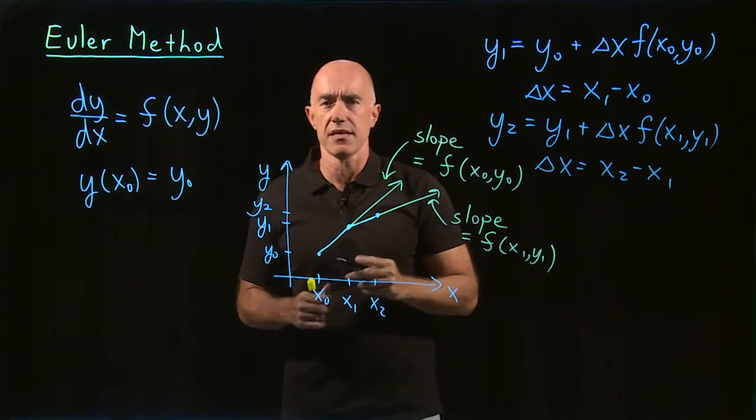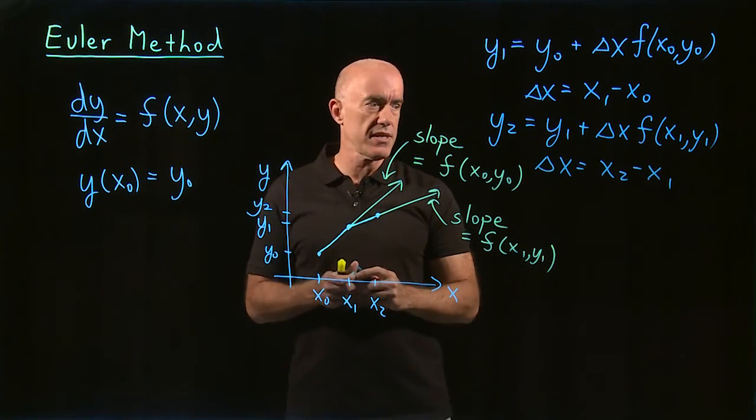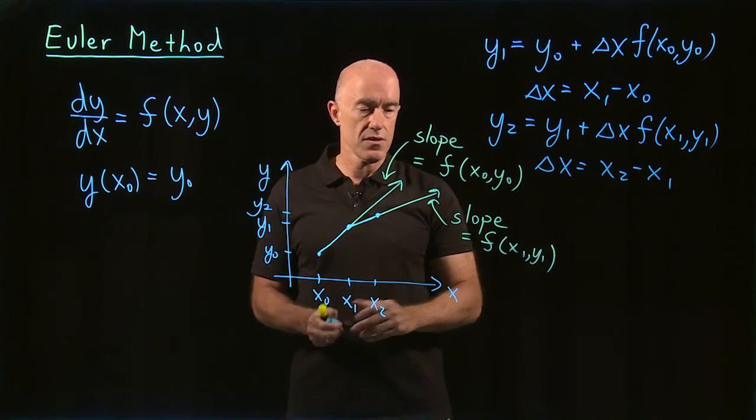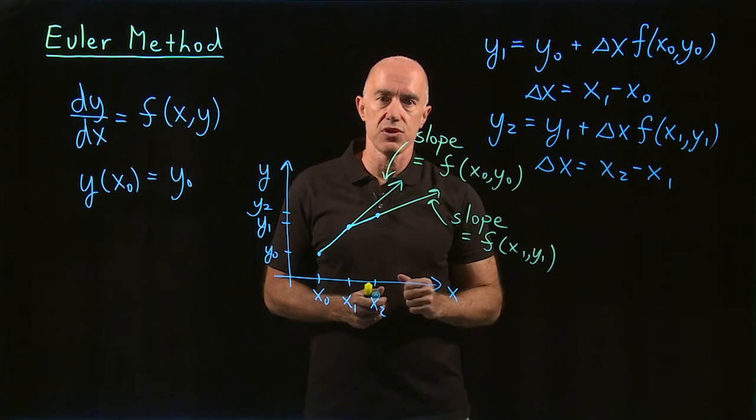So typically in a simple numerical method, you would fix delta x. So delta x would always have the same value. And so on. So you can keep marching the solution.